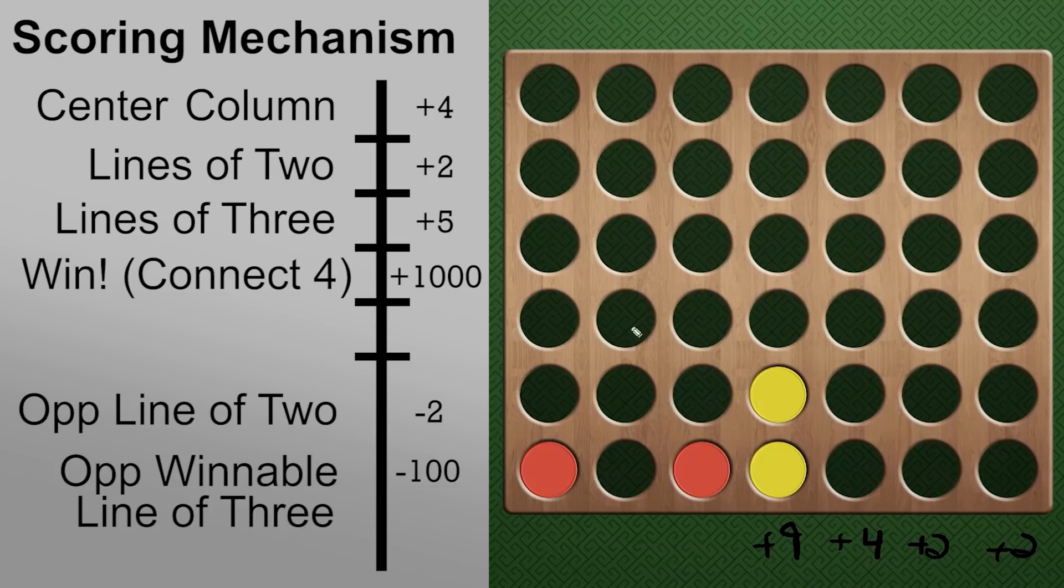Right here doesn't give us anything, so that's zero. And right here would be one horizontal, so that's plus two. We see that this is the greatest value, and as for a third straight time, we drop it in the center column.